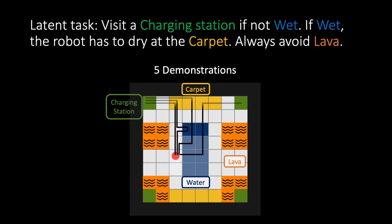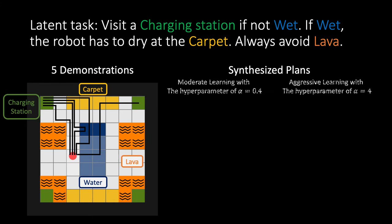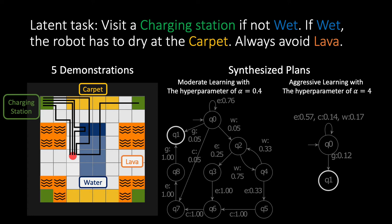We learn from a small number of demonstrations and obtain two different outputs depending on the hyperparameter alpha, which is a measure of how aggressively a lot emerges in the EDSM algorithm. So, higher the alpha, smaller the automaton.